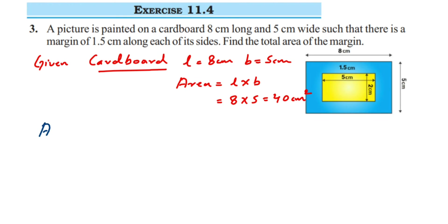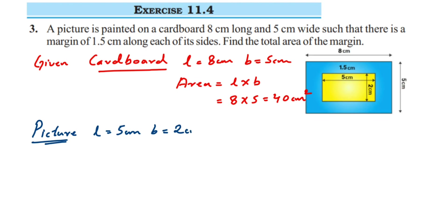Now the same thing for the picture: in the case of the picture, length is 5 centimeter and breadth is 2 centimeter. Area equals 5 multiplied by 2, which gives us 10 centimeter square.